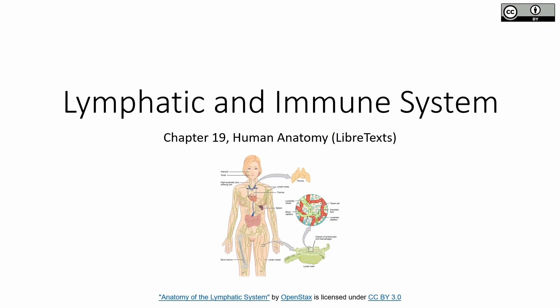Let's go ahead now and get into chapter 19 where we're focused on the lymphatic and the immune systems. We're going to put a heavy emphasis on the lymphatic system, which deals with the physical macroscopic organ-based system, versus the immune system where we're mainly looking at the physiology side. So we're not going to get too far into the immune system — we're going to focus on the lymphatic system for this chapter.